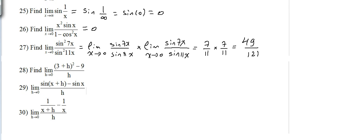Now find the limit of (3 + h)² minus 9 over h as h tends to 0. This one is nice. We can either expand (3 + h)², or we can factorize by leaving it as a square and writing 9 as 3 squared — so we have a difference of squares: a² minus b².